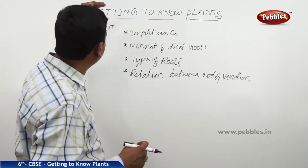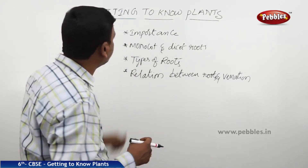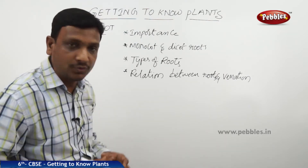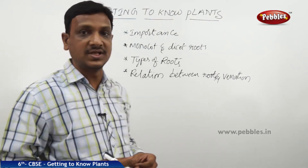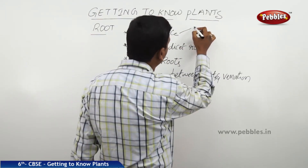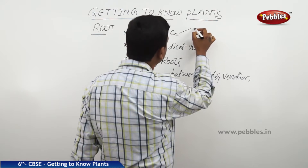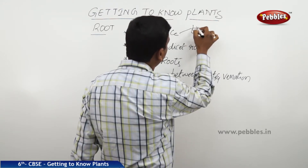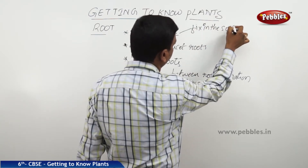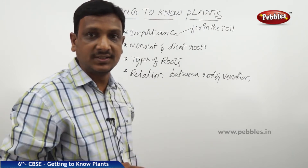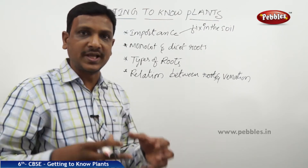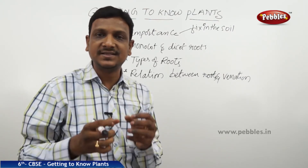Here we have listed the points: importance of the root, monocot and dicot roots, types of roots, and the relation between roots and venation. The first important function is that roots anchor the plant — they help the plant to fix in the soil. The roots hold the soil tightly so the plant can stand.